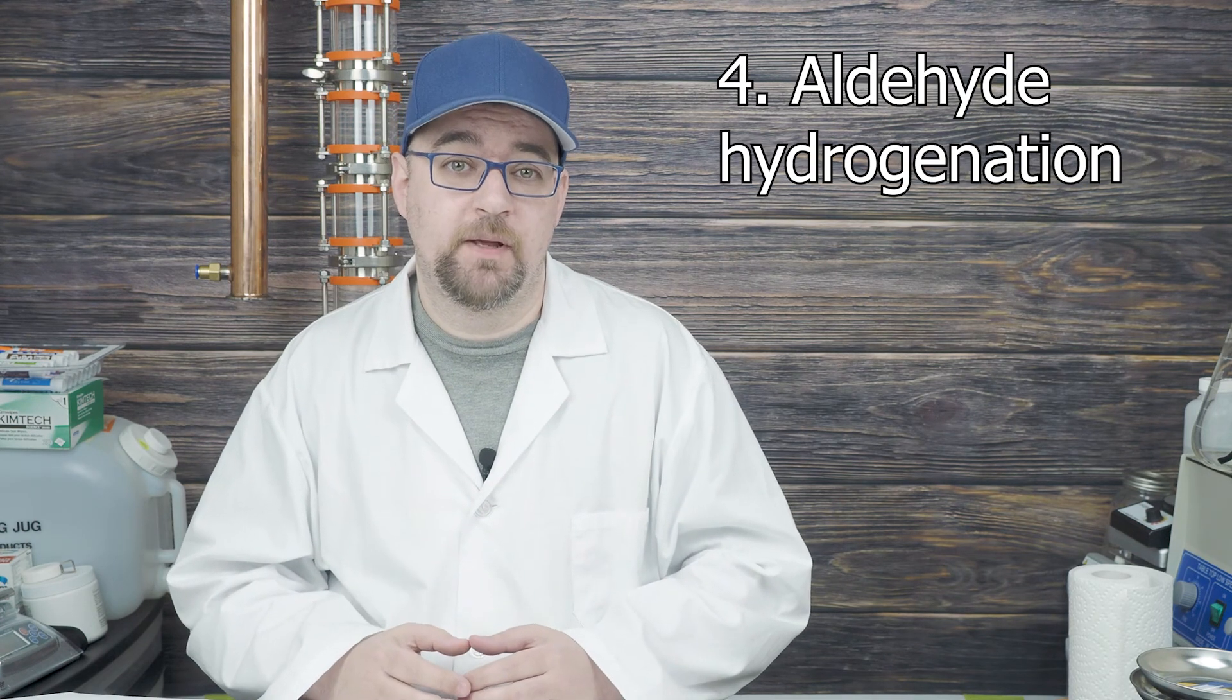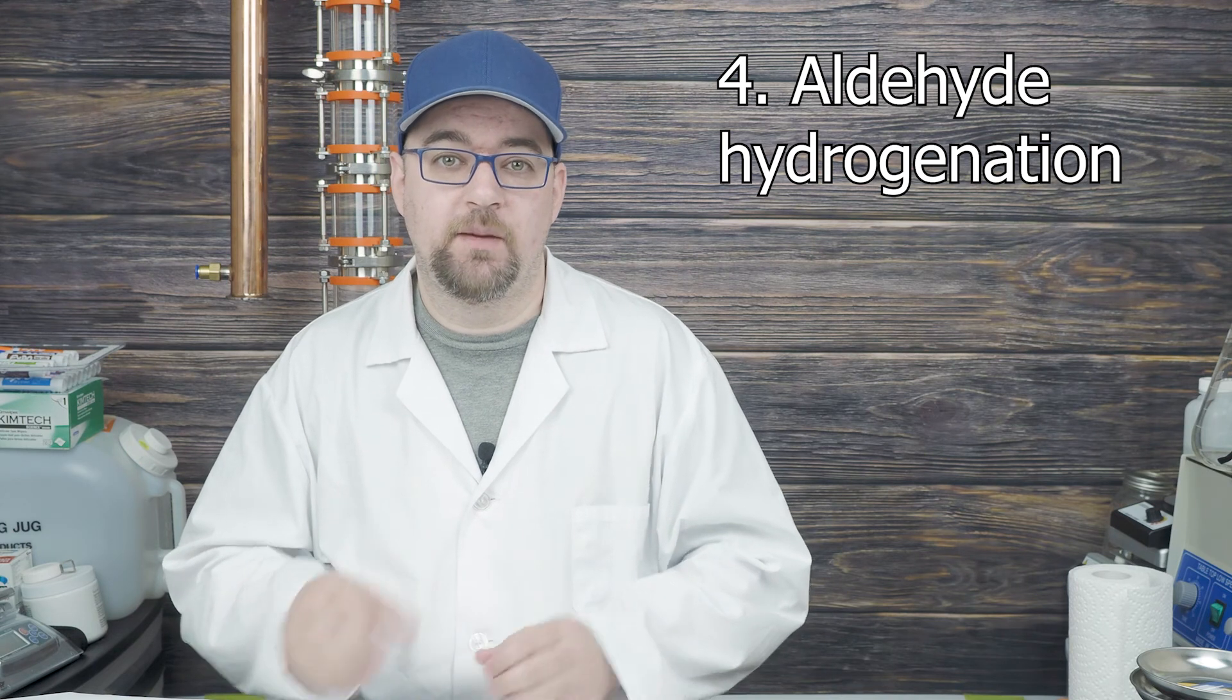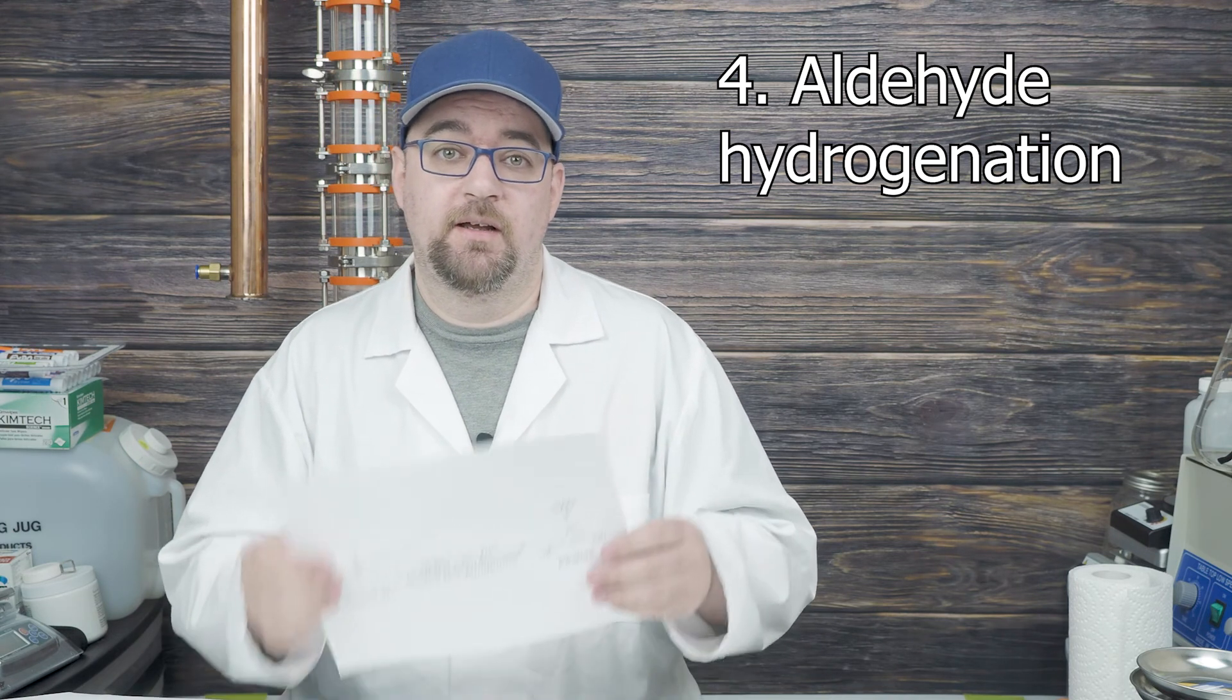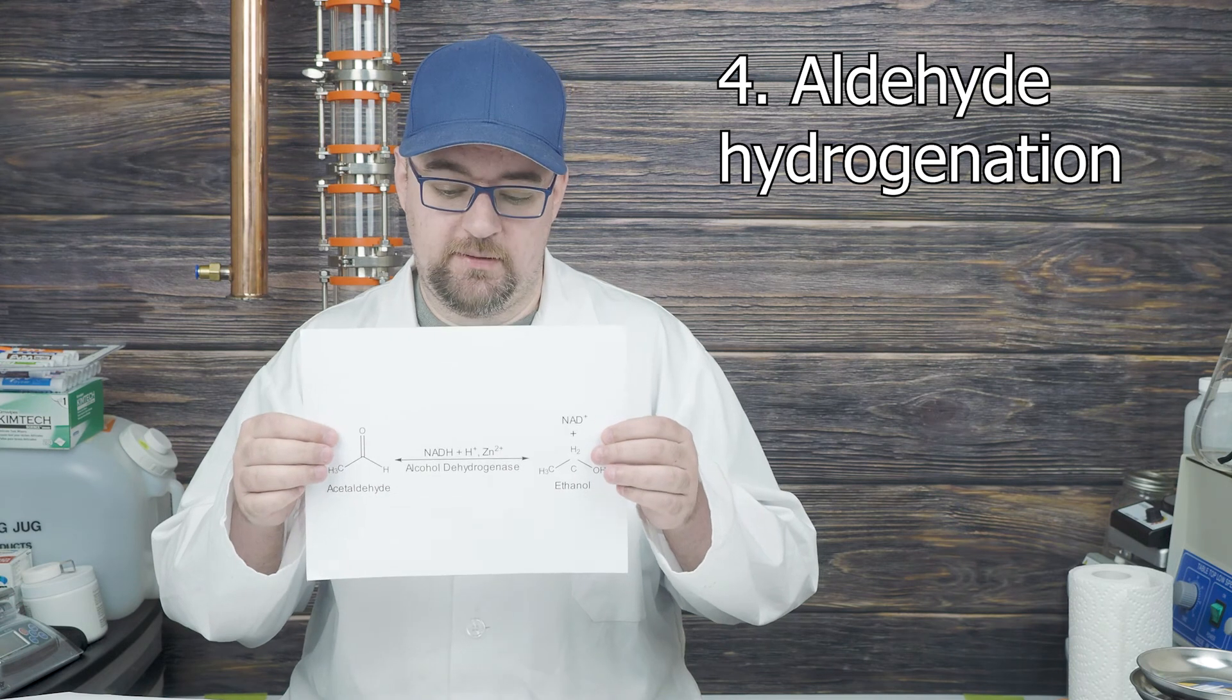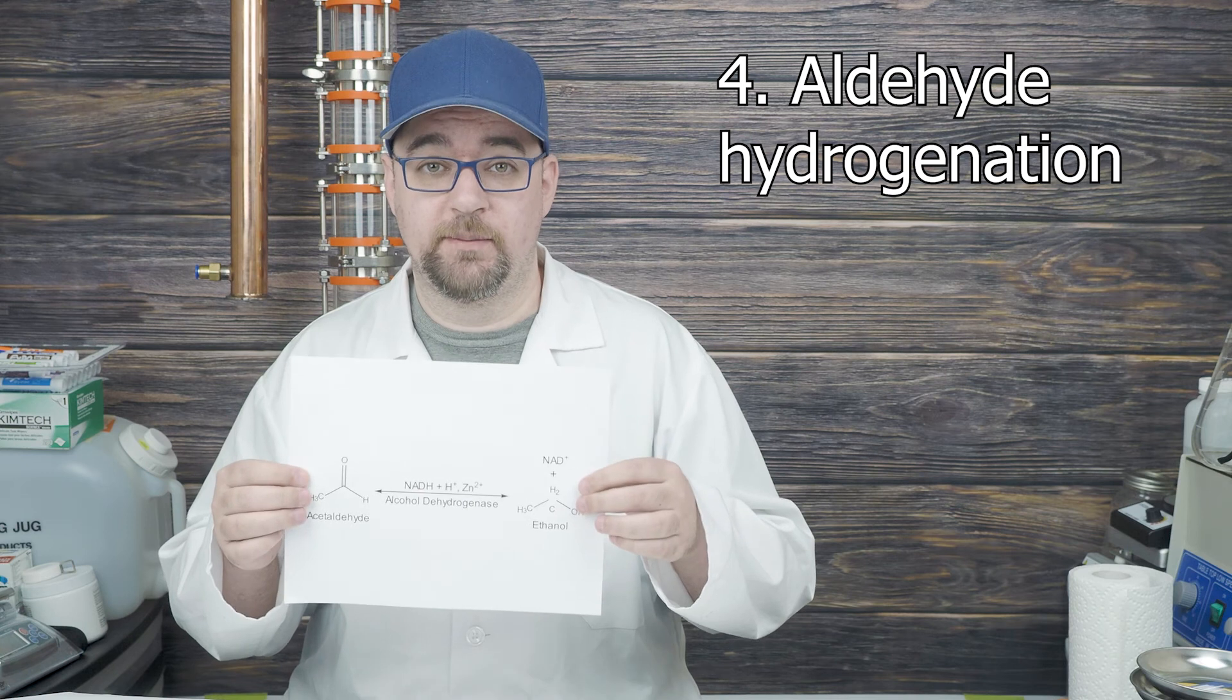Then we have the fourth major step, aldehyde hydrogenation. The acetaldehyde will meet up with an enzyme called alcohol dehydrogenase, where it is converted into ethanol. This is probably one of the simplest steps.